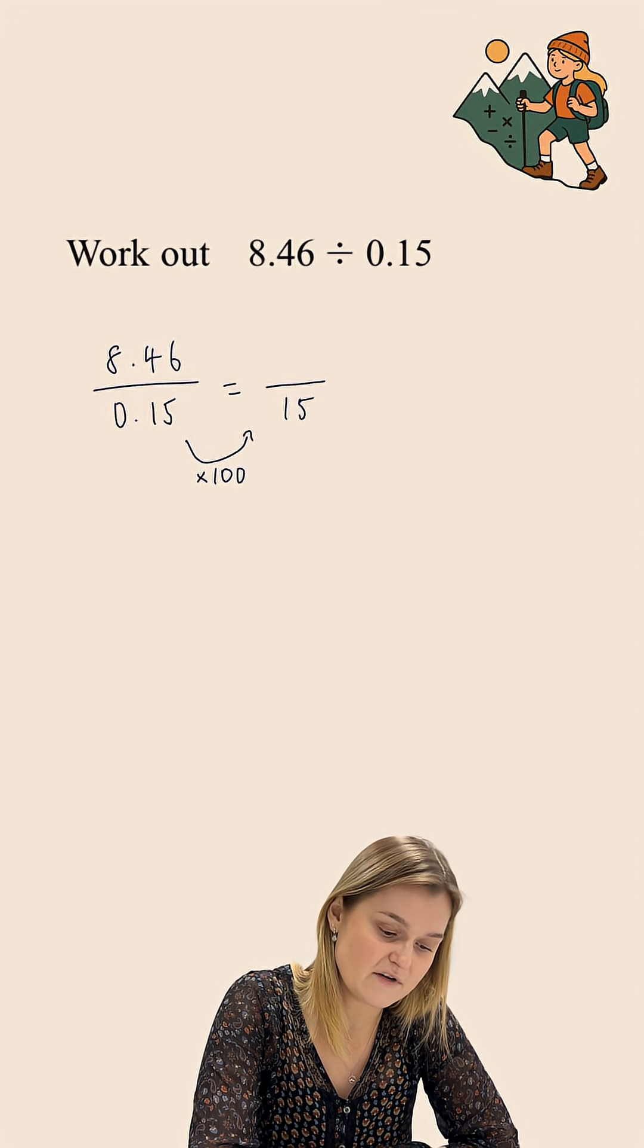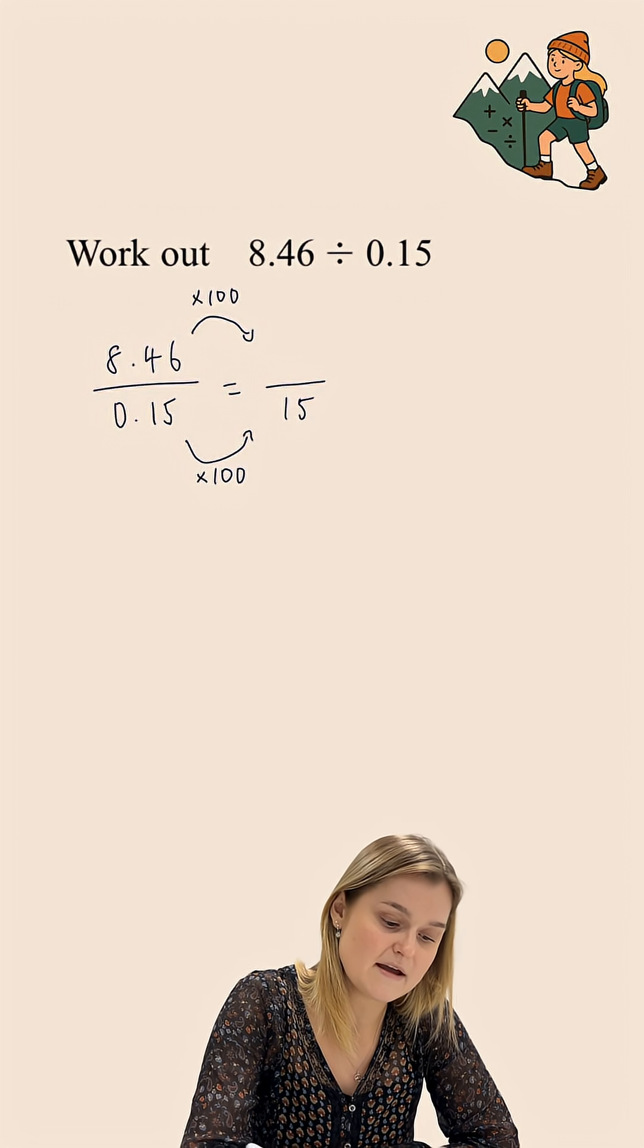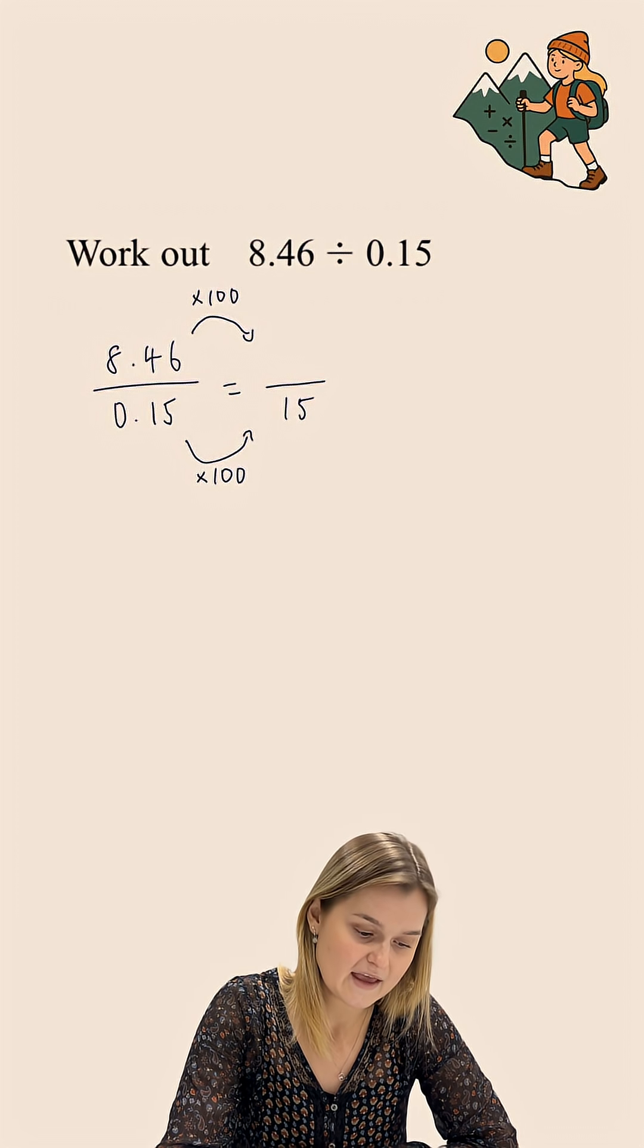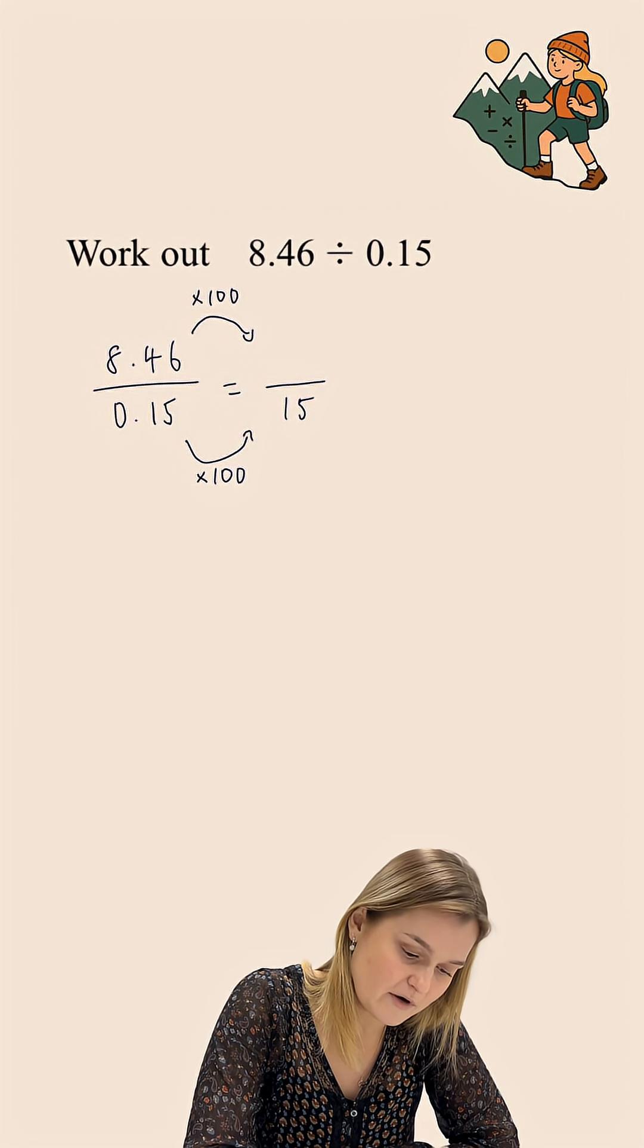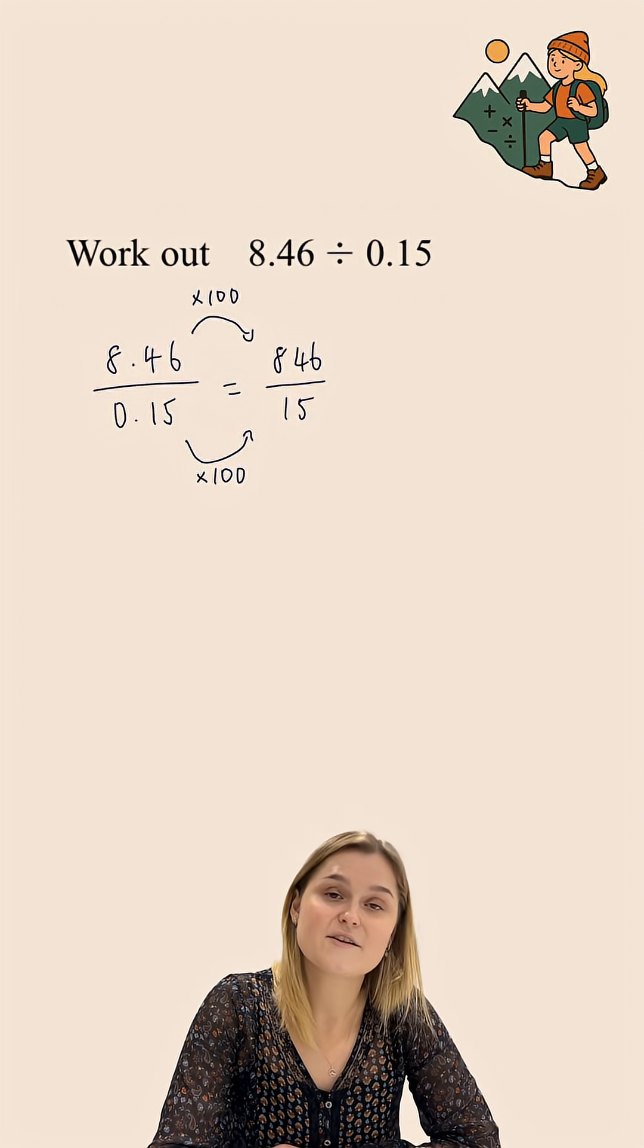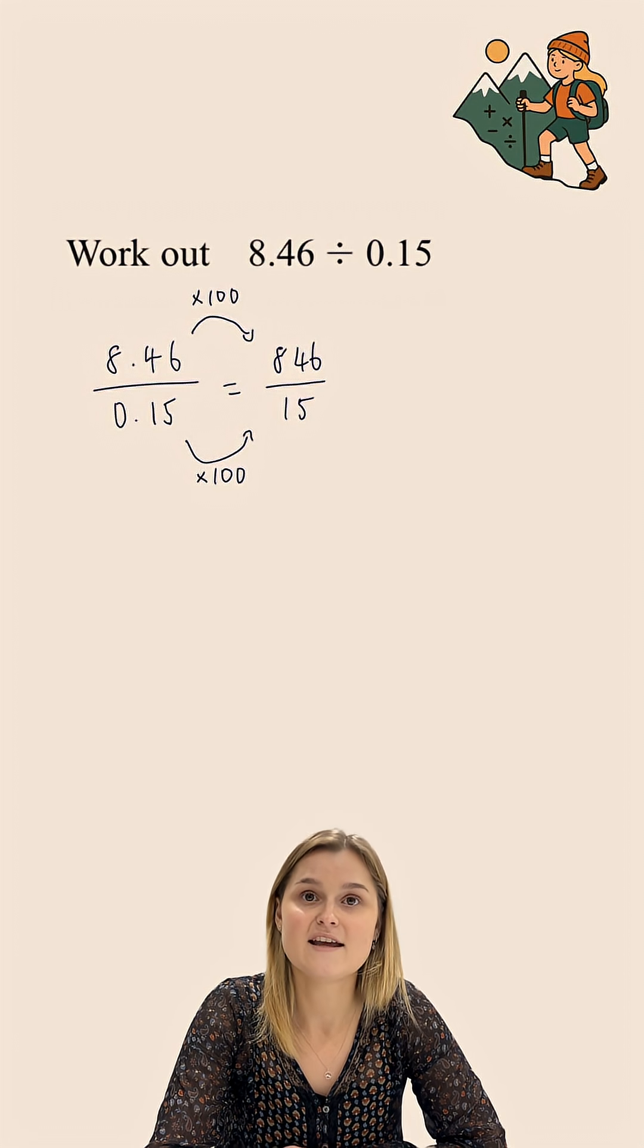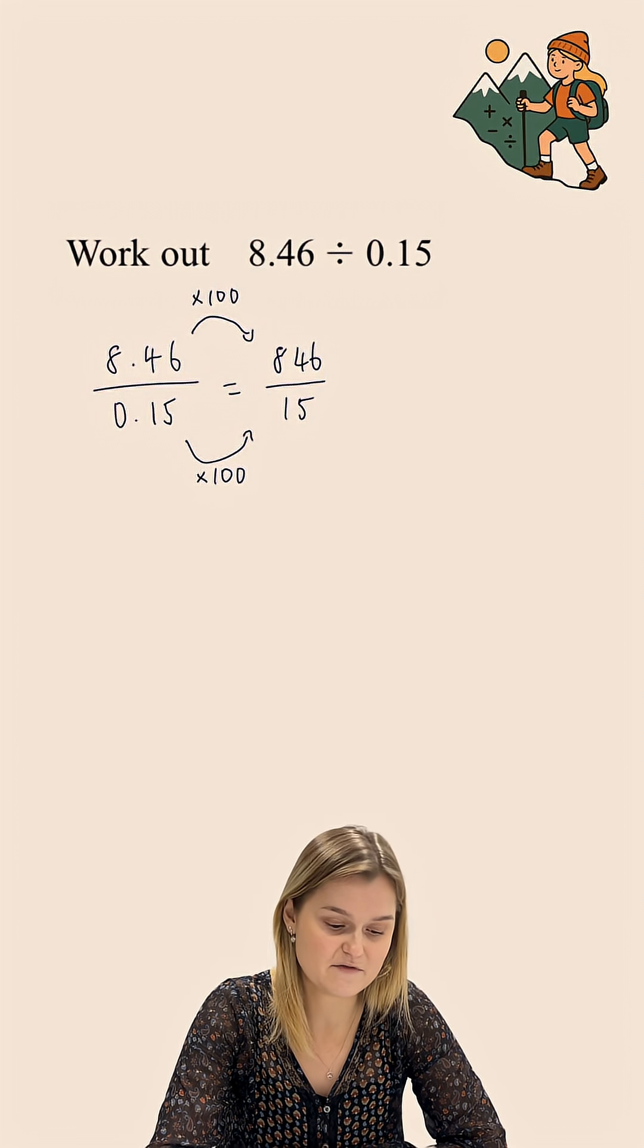Now in order to keep this fraction equivalent, I need to do exactly the same to the numerator. And so I'm going to multiply that by 100 as well. 8.46 multiplied by 100 turns it into 846. So now I'm working out 846 divided by 15. This is a far easier calculation for me to do.